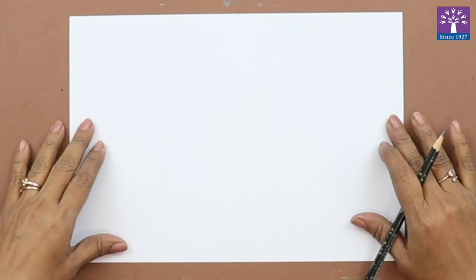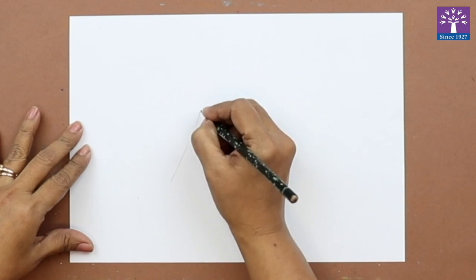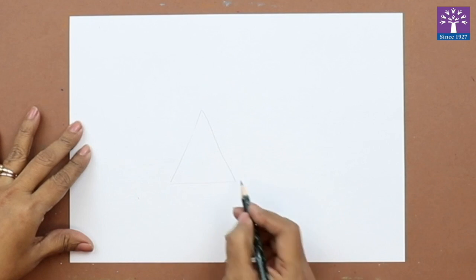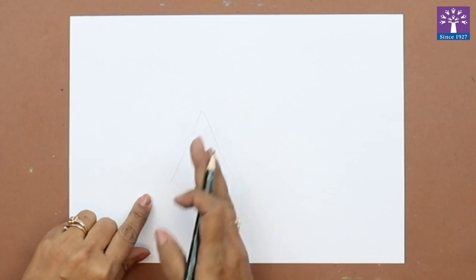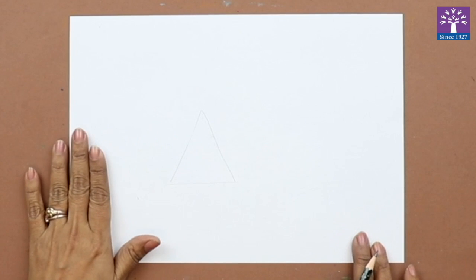Hello friends, our today's activity is a camping tent. We are going to learn how to draw a camping tent. First, you'll draw a triangle. The triangle should be in the center of the page but it should be more towards your left side.